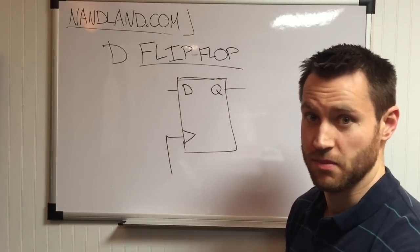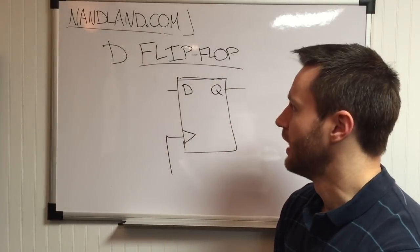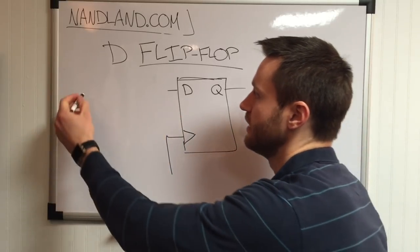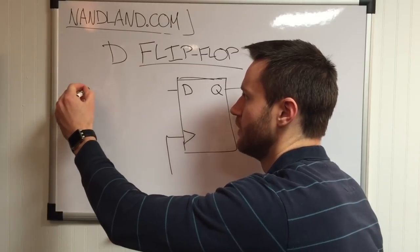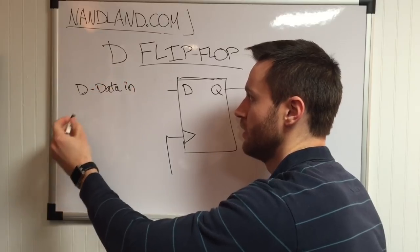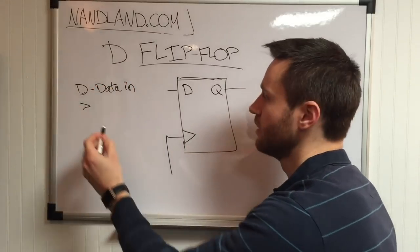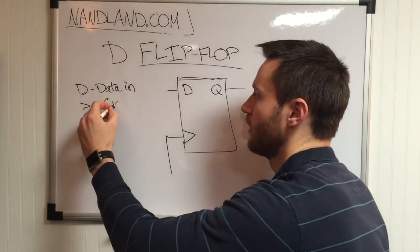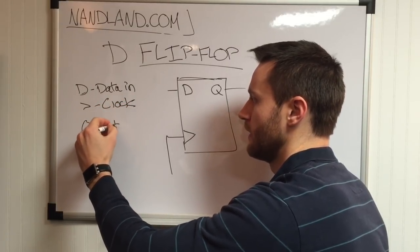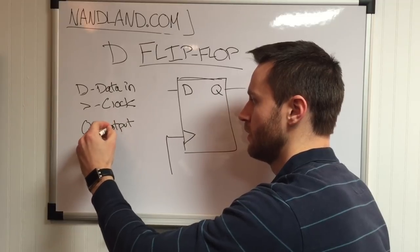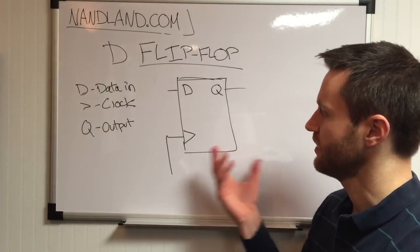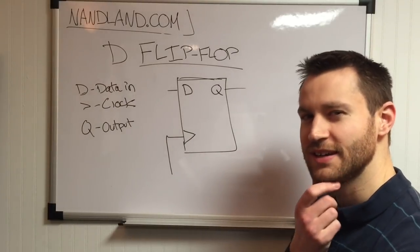There's a reset input, for example, but let's ignore that and just talk about these three. D is your data input — data in. Clock. Q is your output. So it doesn't seem all that complicated; there's just three things.